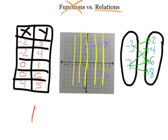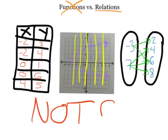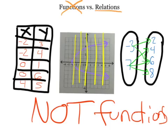So none of these are functions — they are only relations. All functions are a type of relation, but not all relations are functions. It's kind of like how all Labrador retrievers are dogs, but not all dogs are Labrador retrievers. These are not functions because they have more than one output for a given input.